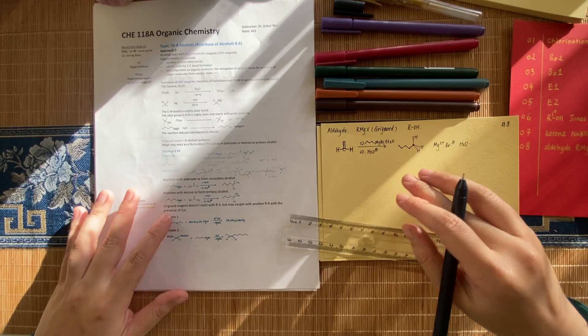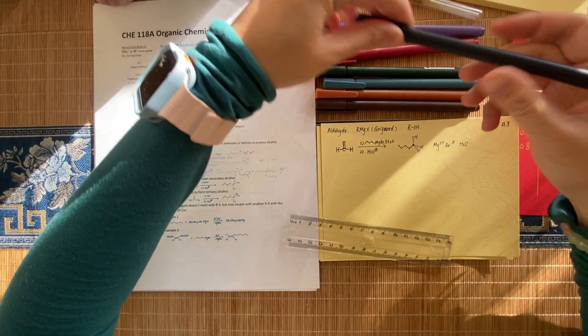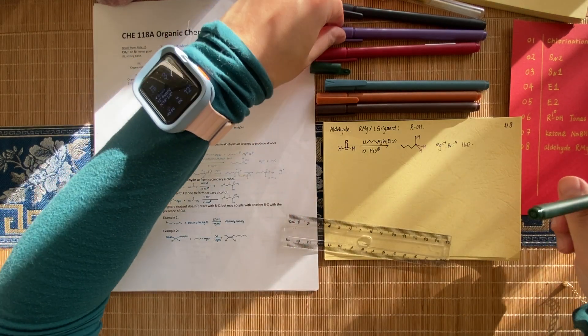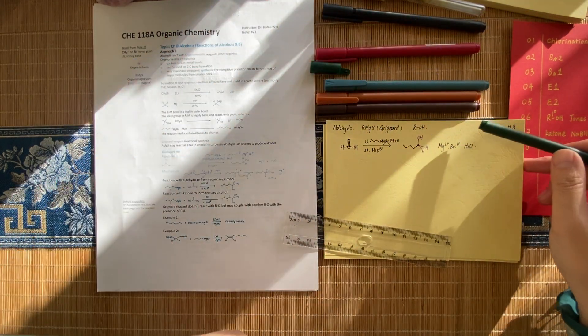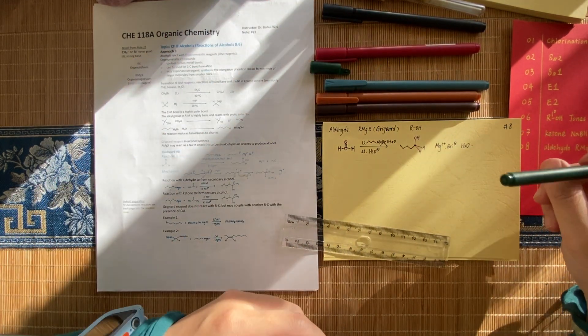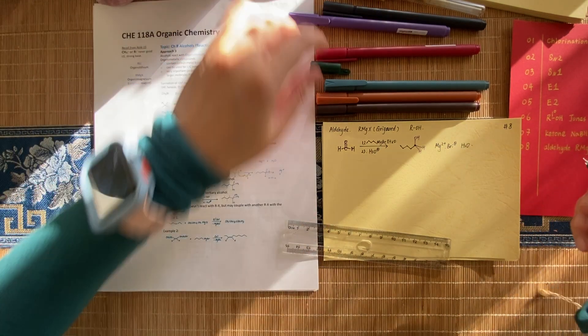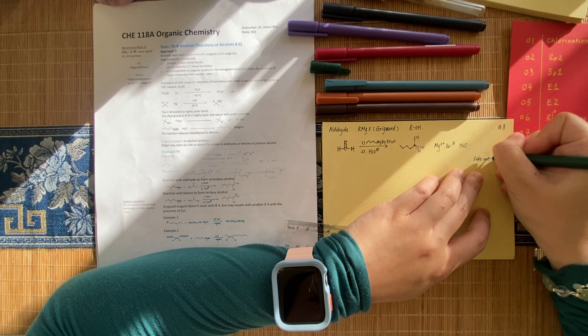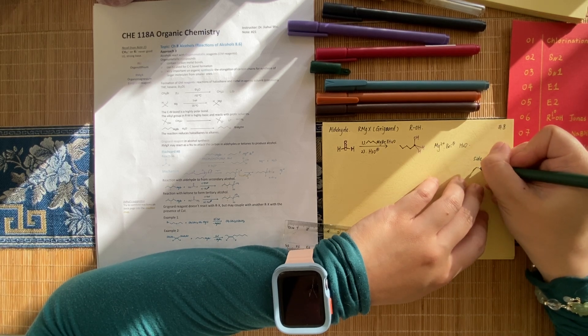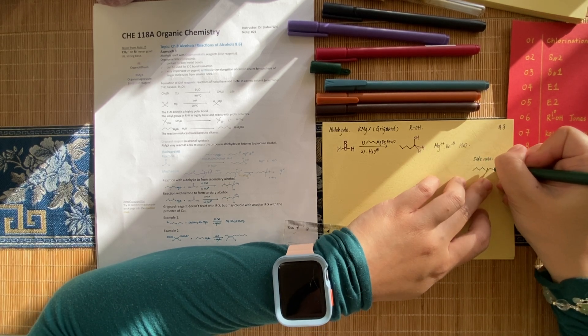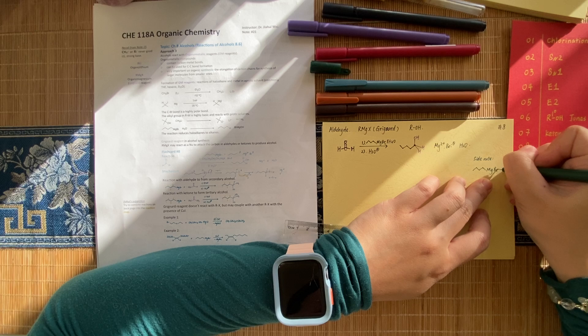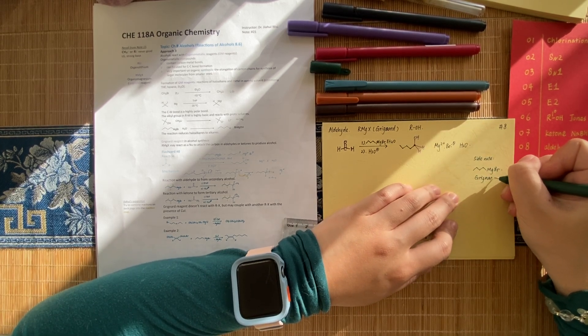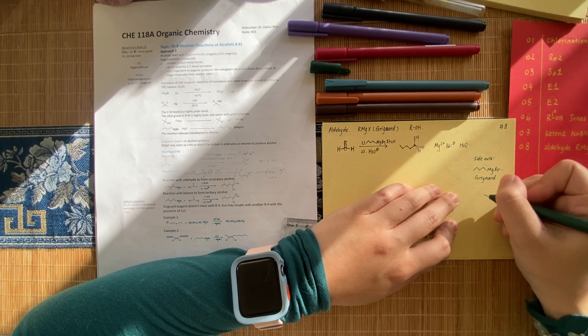All right. Let's write the mechanism. To keep consistent, I'll use purple for the formaldehyde so you can see clearly where it is. Let's put the side note here. Side note. MgBr. MgBr.